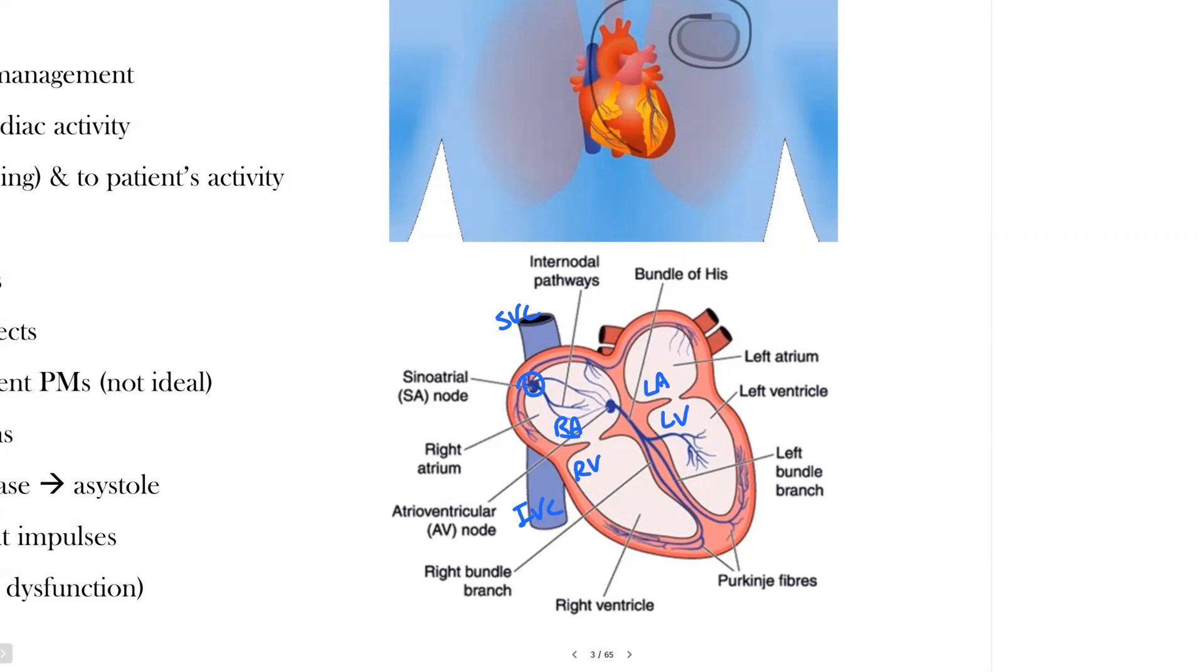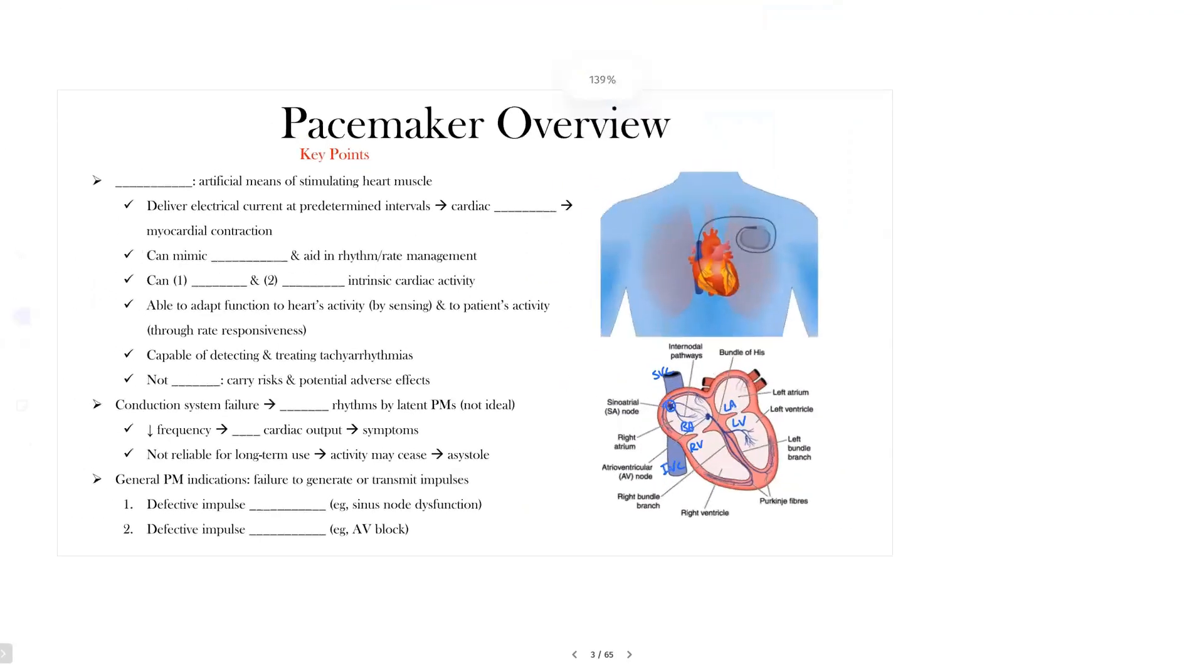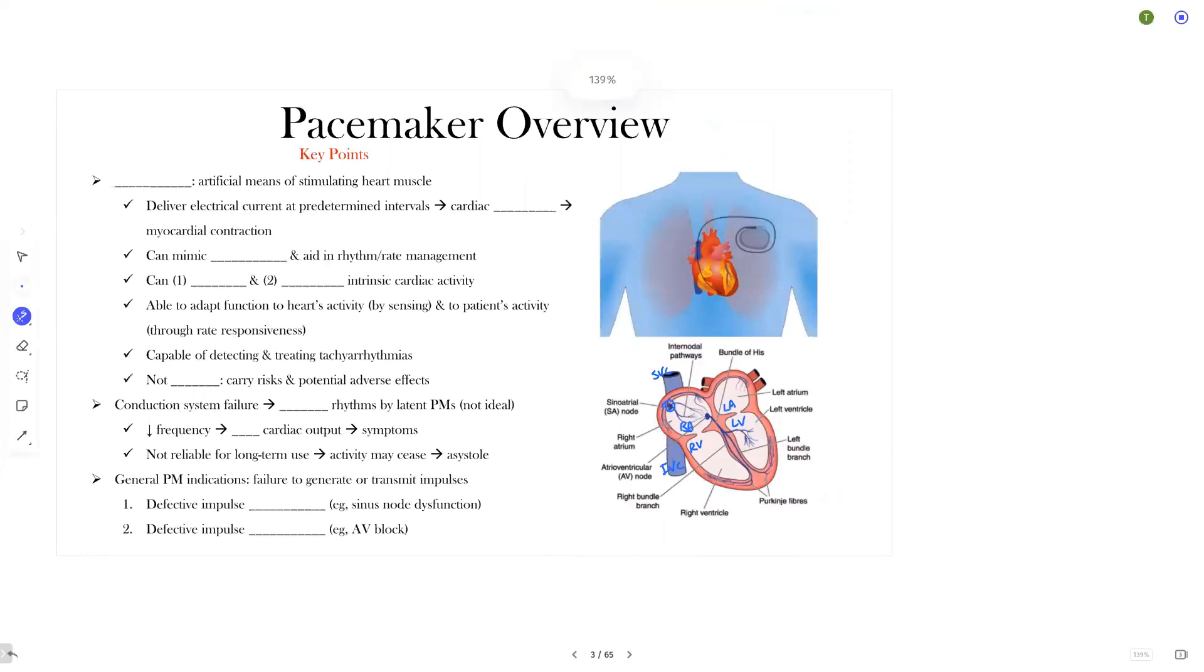The first one is that the escape rhythms established by latent pacemakers have a lower frequency. So that's one of the first shortcomings. So they have a lower frequency, and as a result of this, this can result in a lower cardiac output and thereby causing symptoms. The other limitation is that these escape rhythms are established by a latent pacemaker, often unreliable in the long-term use. And because of this, they may cease and result in asystole.